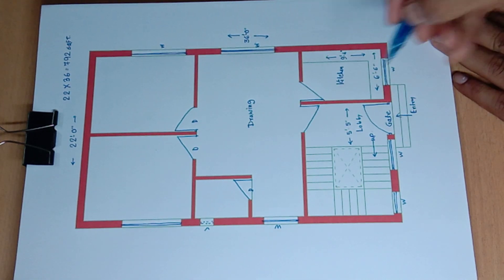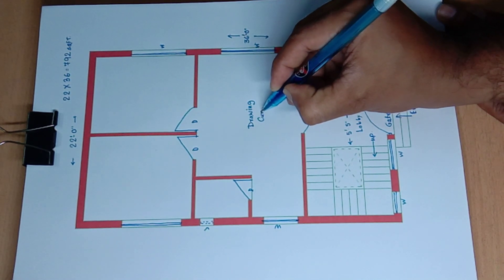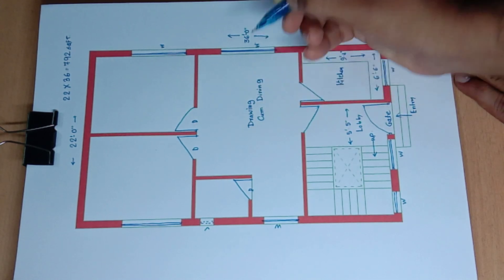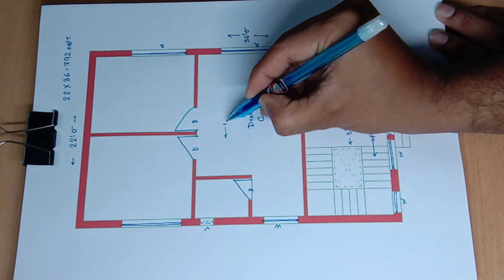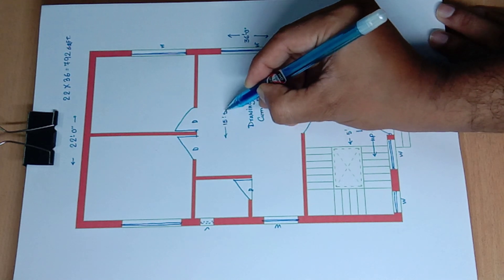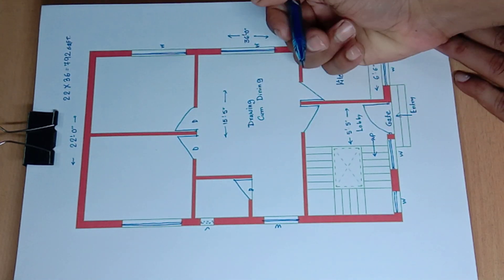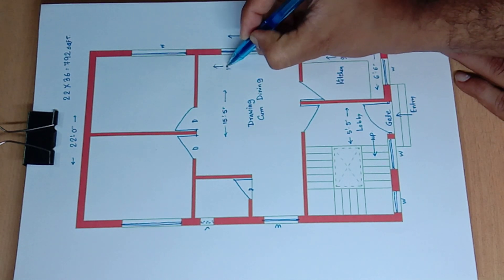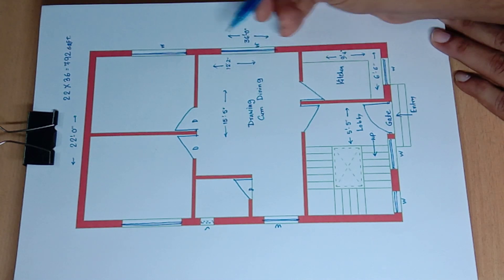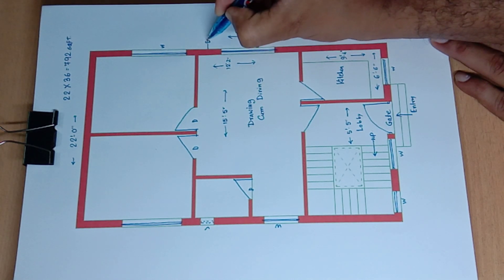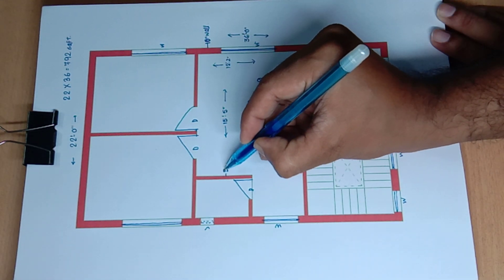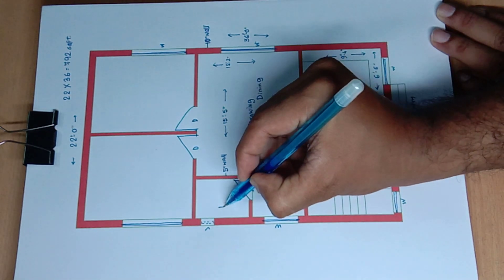Drawing come dining. 15 feet 5 inch, 12 feet 2 inch outside wall. 10 inch wall, inside wall 5 inch wall brick wall.